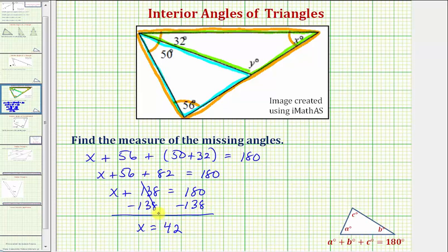So if x equals 42, we now know the measure of this angle is 42 degrees. Now let's focus on this upper smaller triangle.